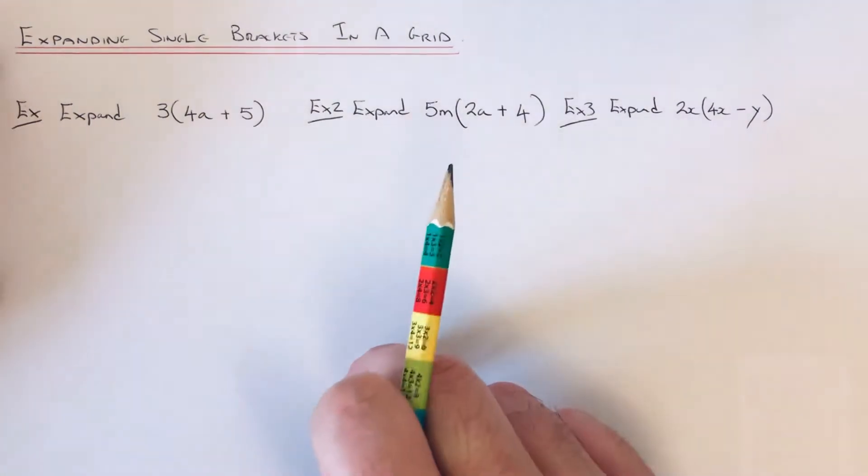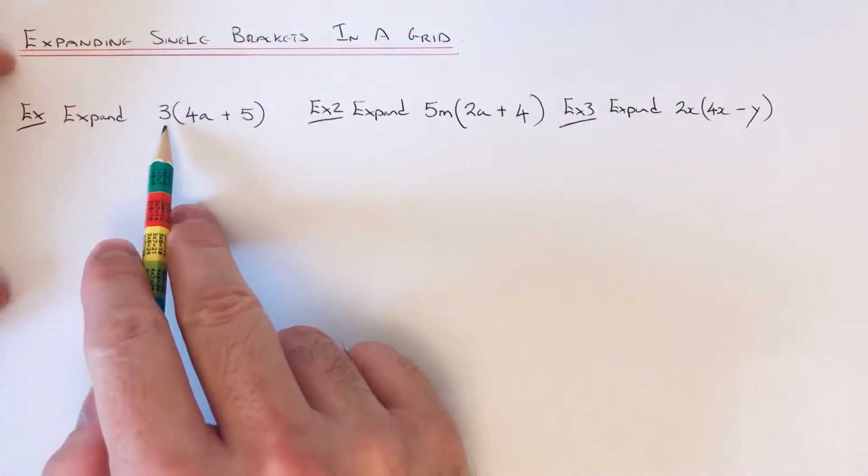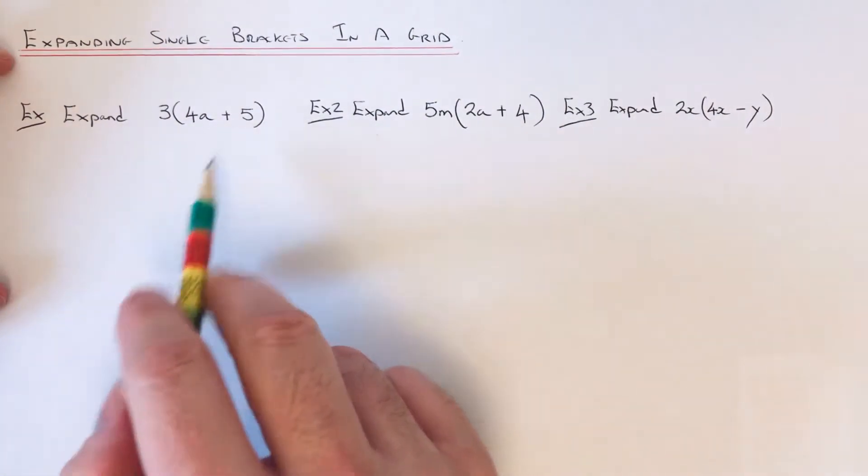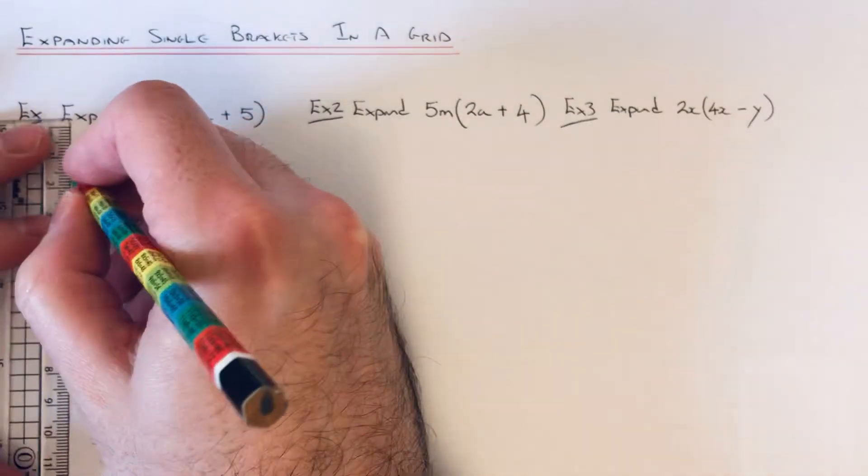Okay, so let's do Example 1. I'm going to expand 3(4a + 5), so I'm just going to draw a grid.